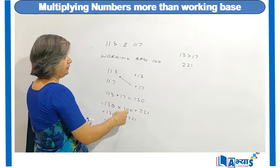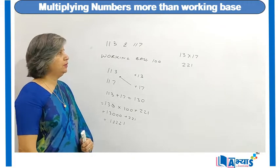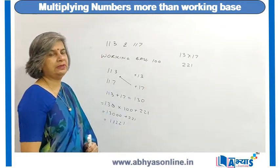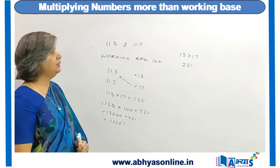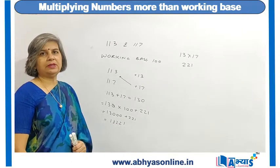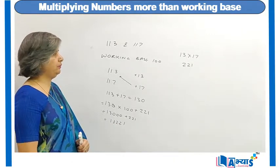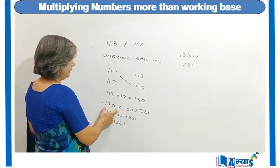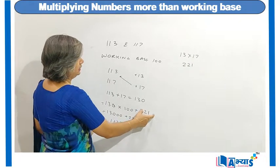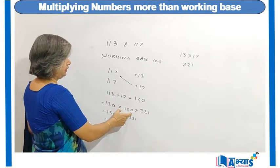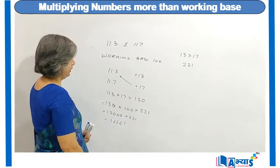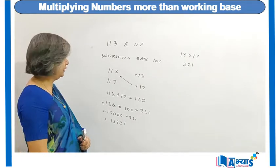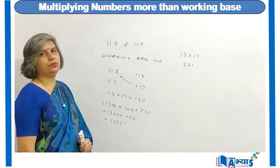113 plus 17 equals 130. The next step: I will multiply the two surplus numbers, which are 13 and 17. When I multiply 13 with 17, I get 221. So the answer will be 130 into the base plus the multiplication — that is, 130 into 100 plus 221, which equals 13000 plus 221 = 13221.